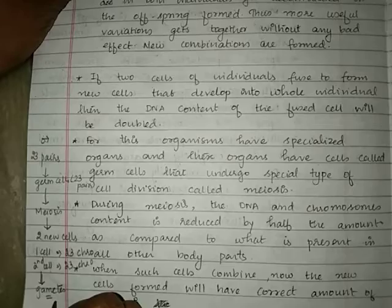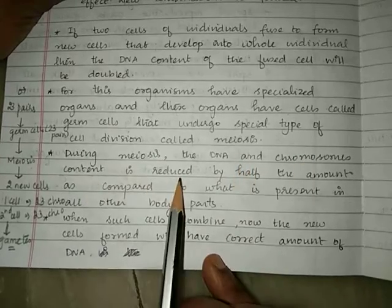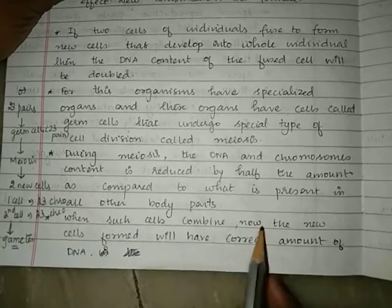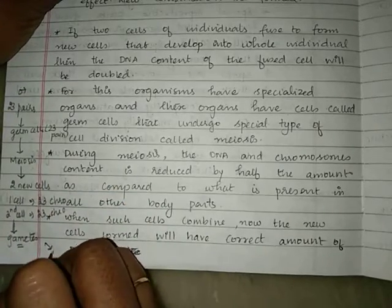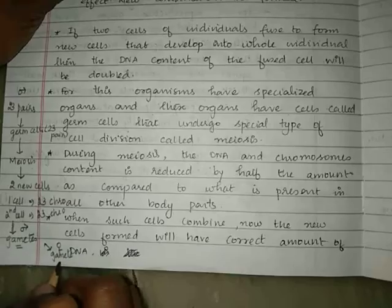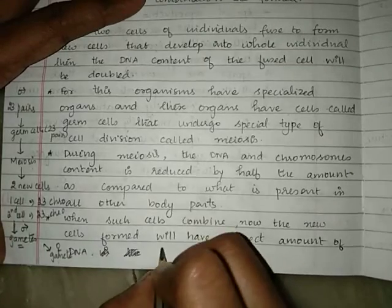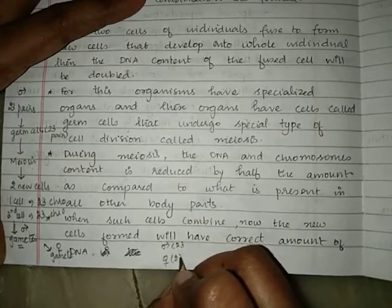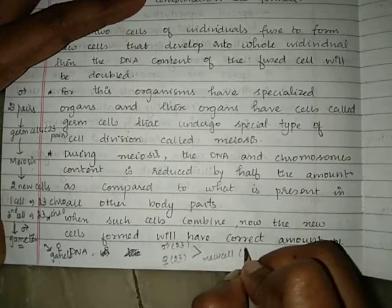During meiosis, DNA and chromosome content is reduced by half compared to what is present in all other body parts. When the female gametes and male gametes combine, the new cell that is formed will have the correct amount of DNA. Male gametes have 23 chromosomes and female gametes have 23, so when they combine they form a new cell with 23 pairs.